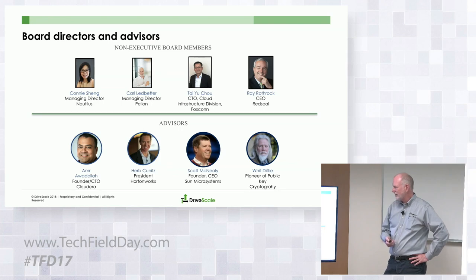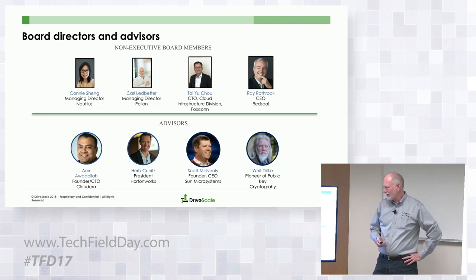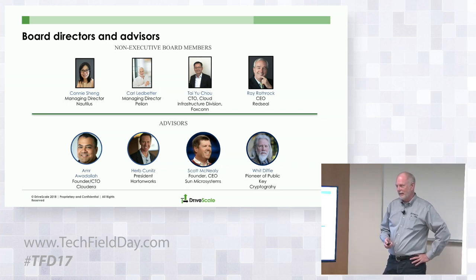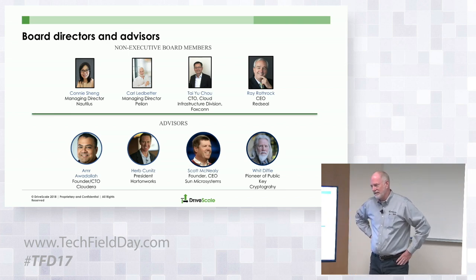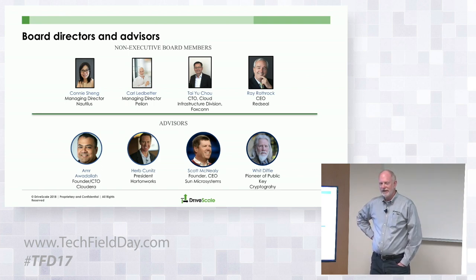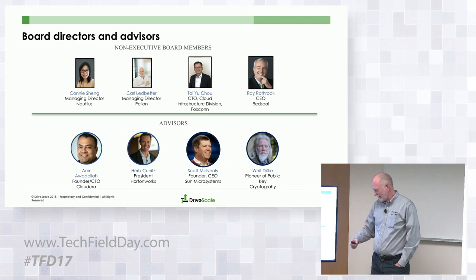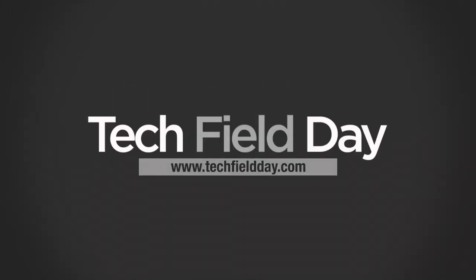We have great investors and some really nice advisors, including Scott McNeely and Whit Diffie. Herb Koenig, who used to be the president of Hortonworks. Amir Adewala, the CTO and co-founder at Cloudera, was our very first investor — he put $50,000 into the company right after Tom and Satya talked to Cloudera when they founded the company. Tai Yu Chao is on our board — he's the CTO of the $60 billion a year infrastructure division at Foxconn, who makes all the hardware for Dell, Cisco, and NetApp. Really a strong set of people.